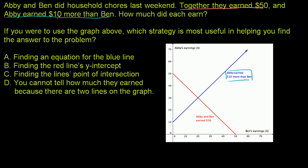If you call this the B-axis for the amount Ben earned, and this is the A-axis for the amount Abby earned, the equation of this line would be A = 10 + B. That's the equation of that line right there. Well, that by itself isn't going to help you figure out how much each earned. So that by itself won't solve the problem.